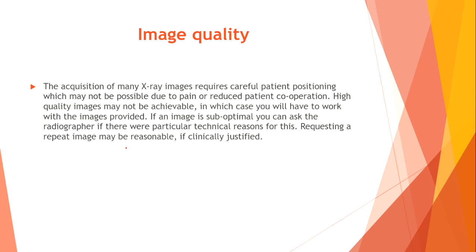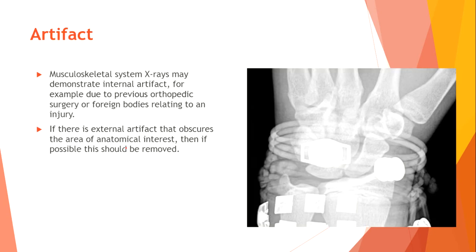Image quality. The acquisition of many x-ray images requires careful patient positioning, which may not be possible due to pain or reduced patient cooperation. High quality images may not be achievable, in which case you will have to work with the images provided. If an image is suboptimal, you can ask the radiographer if there are particular technical reasons for this. Requesting a repeat image may be reasonable if clinically justified. Artifact — musculoskeletal x-rays may demonstrate internal artifact, for example due to previous orthopedic surgery or foreign bodies. If external artifact obscures the area of anatomical interest, it should be removed if possible.